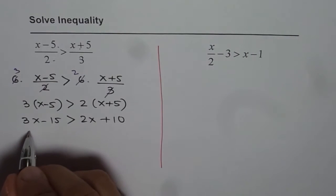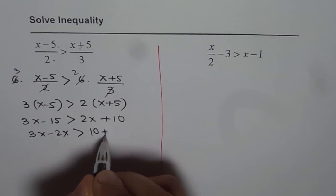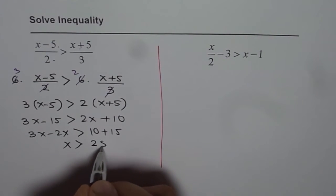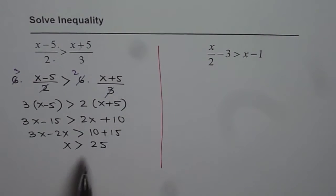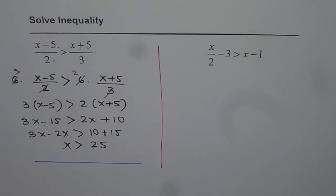Bringing the terms together. 3x minus 2x is greater than 10 plus 15. So it is x greater than 25. Now you can write answer x greater than 25. Sometimes you may have to represent the answer on a number line. In that case, you can draw a number line.